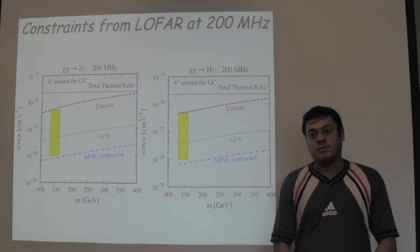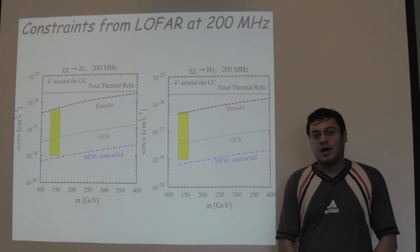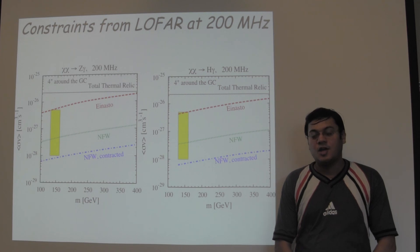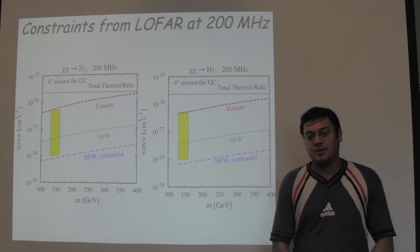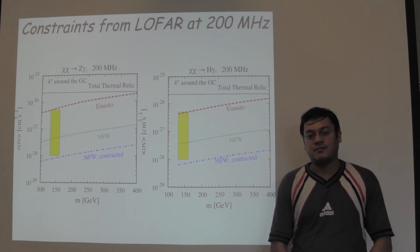Although our work has been motivated by the presence of this 130 GeV gamma ray line, our limits are applicable for any gamma ray line ever found at the galactic center. We hope you will enjoy reading our paper which has been posted in the arXiv server. Thank you.